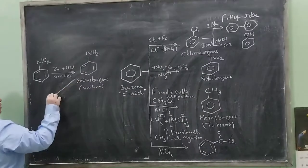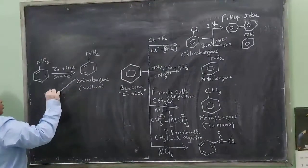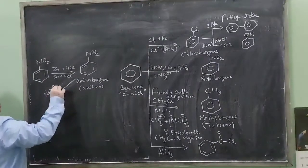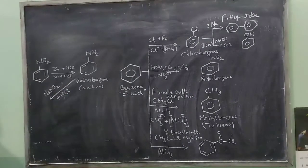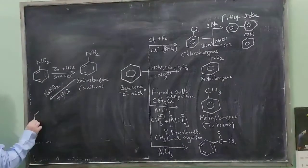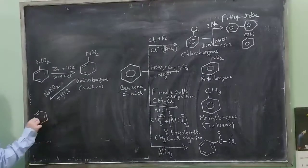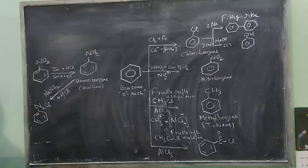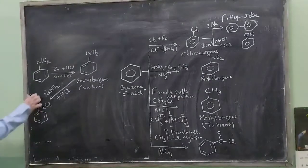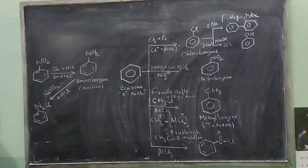This aniline, if it is treated with NaNO2 plus HCl, it will form benzene diazonium chloride. Now from this benzene diazonium chloride we can prepare a number of compounds.